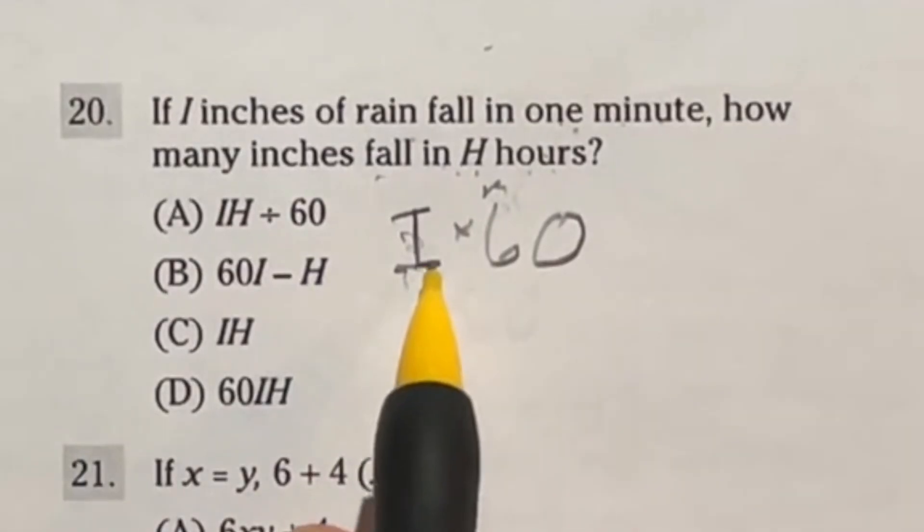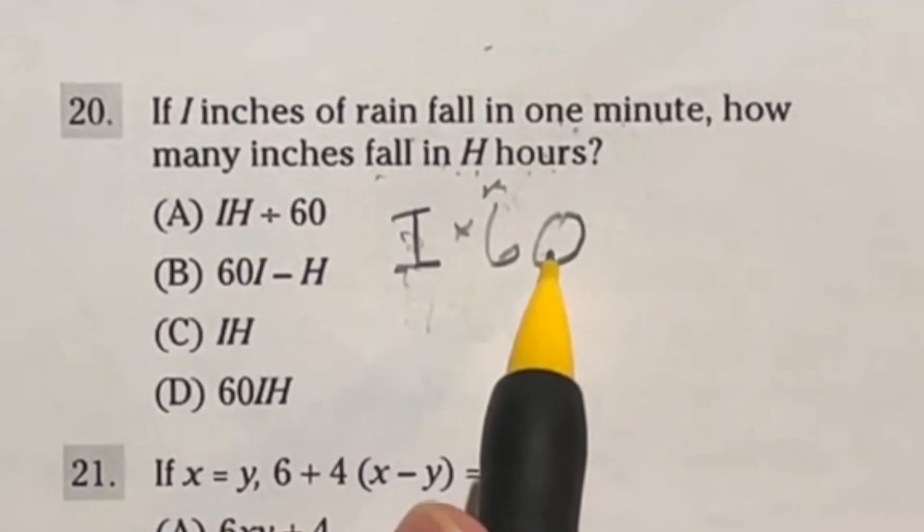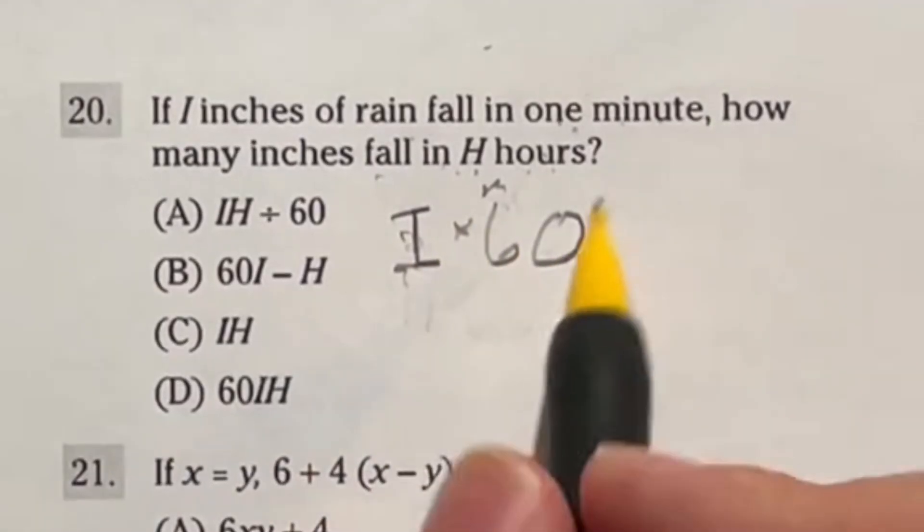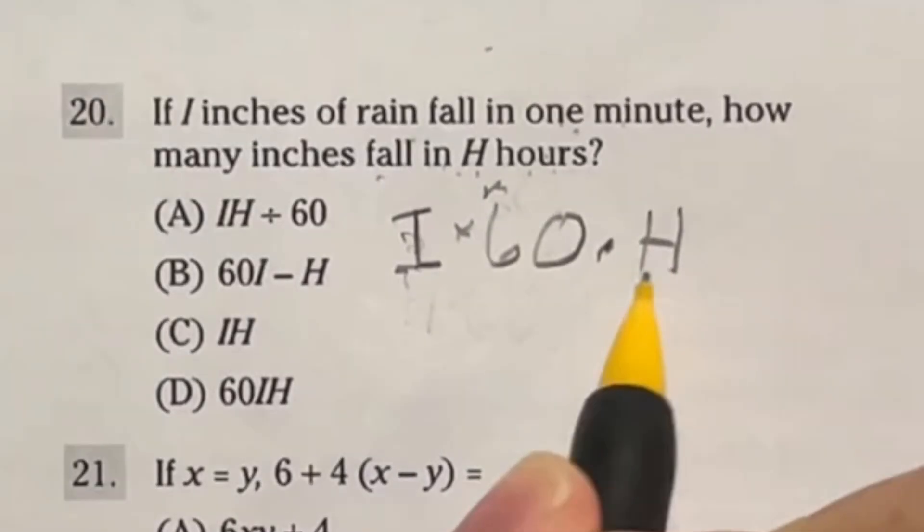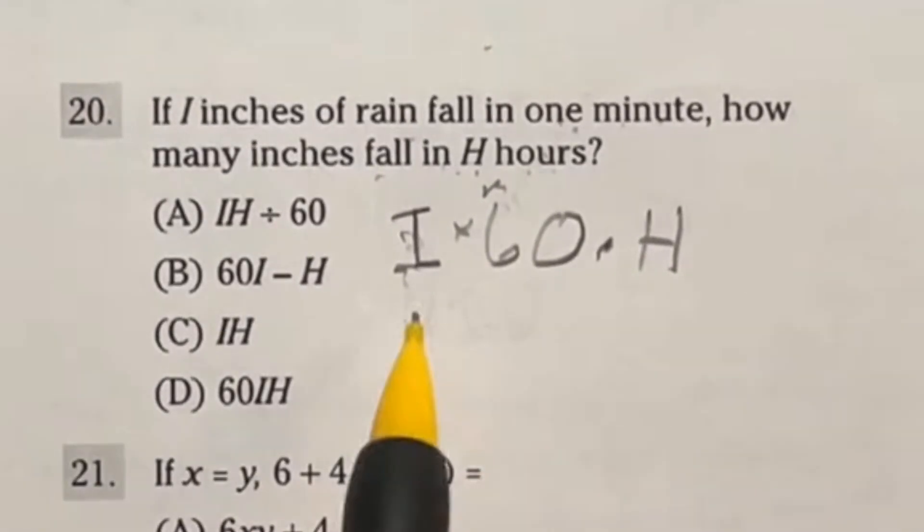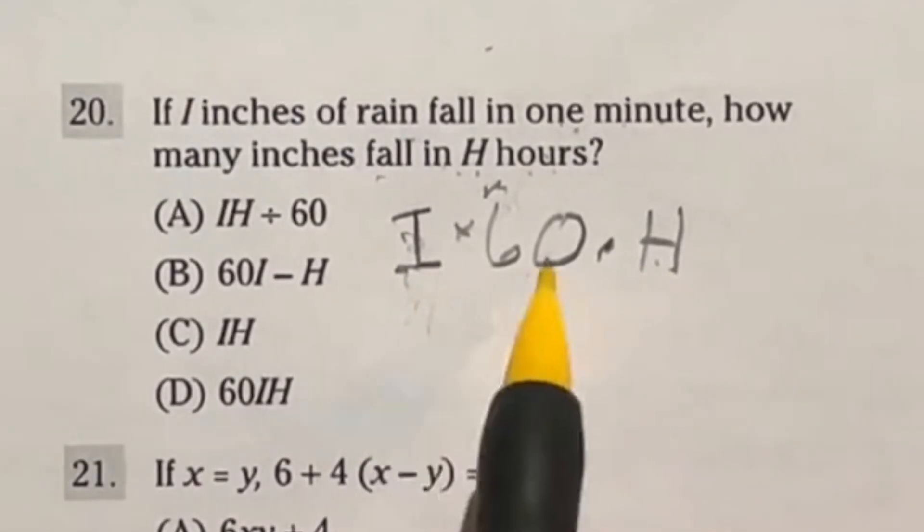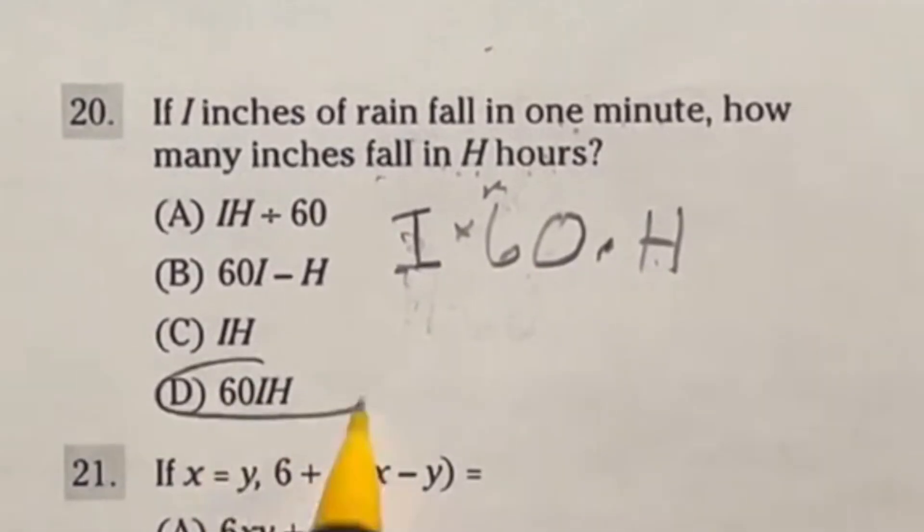So then what if I have h hours? Well, if I know this is how many I'm getting in one hour, then if I'm going to do it in two, I would just multiply that answer by two. If I want to get it in three hours, I'm going to multiply it by three. So again, we're just going to be multiplying it by h. So our final answer here should be i times 60 times h. And since it's commutative, you can actually switch the ordering of those, meaning our answer is D.